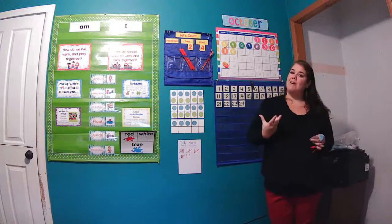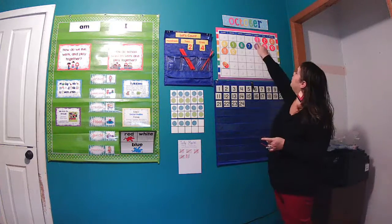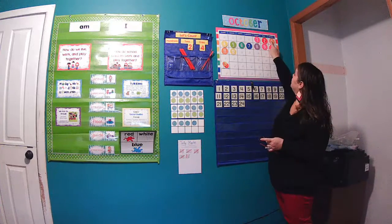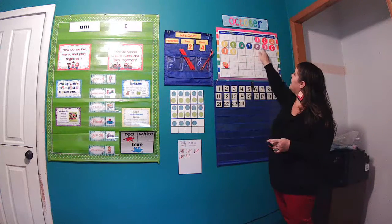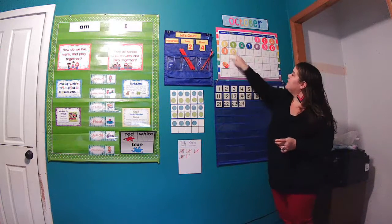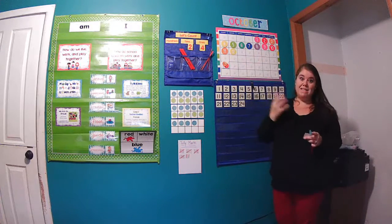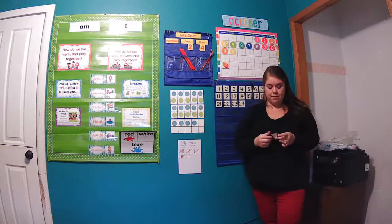Let's go ahead and count the days in October: one, two, three, four, five, six, seven, eight, nine, ten, eleven, twelve days so far in the month of October.